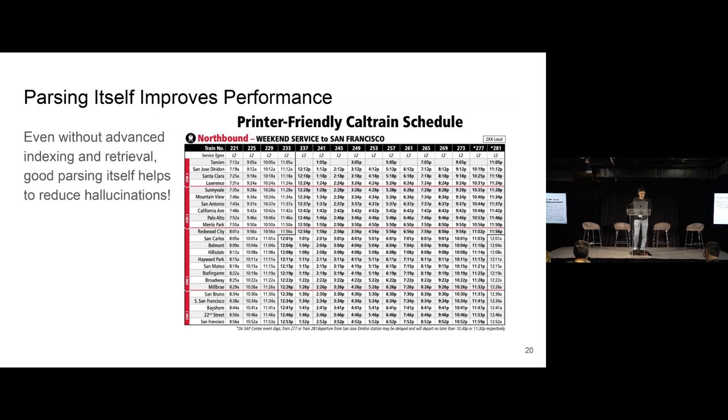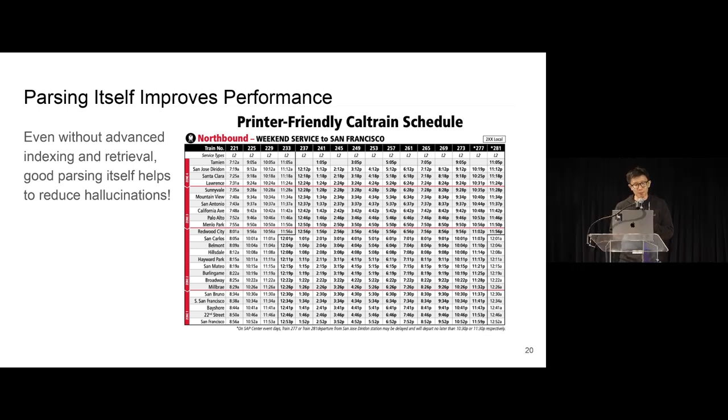Taking a step back, one of the core ideas is actually pretty interesting. Parsing itself can improve performance by quite a bit. So even without advanced indexing and retrieval, if you're still just doing the dumb thing about chunking every number of sentences and then doing top-K dense retrieval without any sort of hybrid search or BM25, good parsing itself helps to reduce hallucinations by a lot.